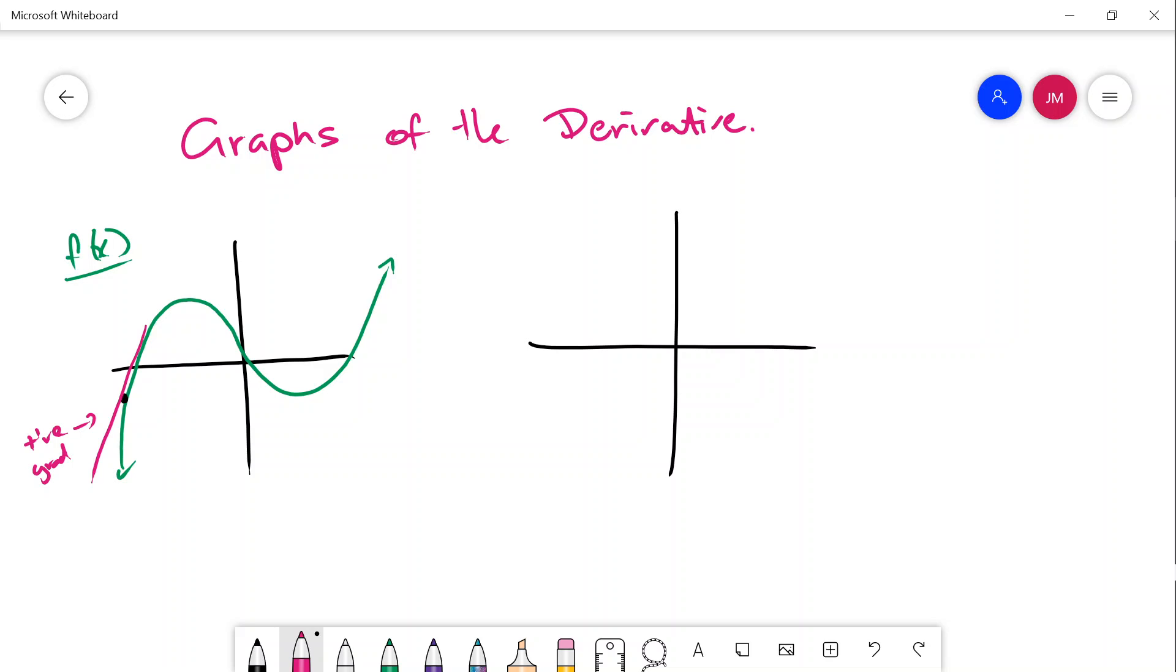If we draw another point here in the middle and draw a tangent line, we can see it's got a negative gradient. At the turning point here you get a horizontal line, so the gradient would equal zero. You'd have another one there, m equals zero, and over here you'd see it's positive.